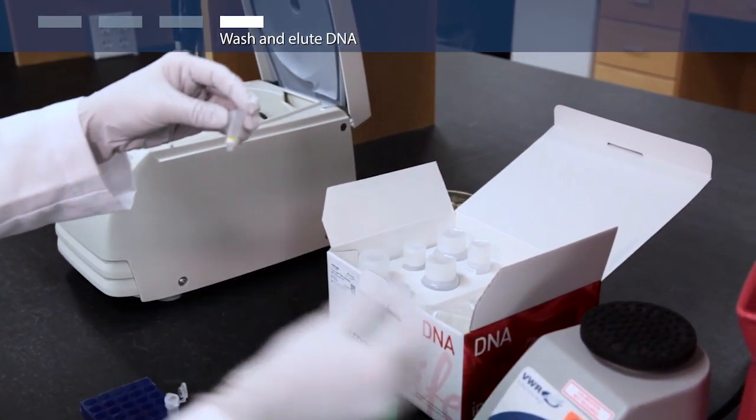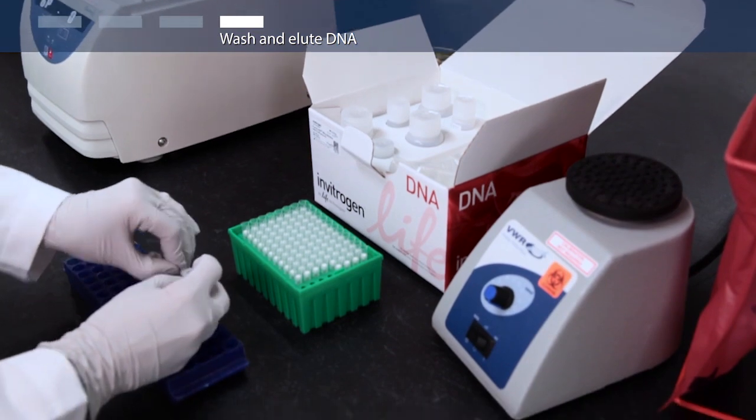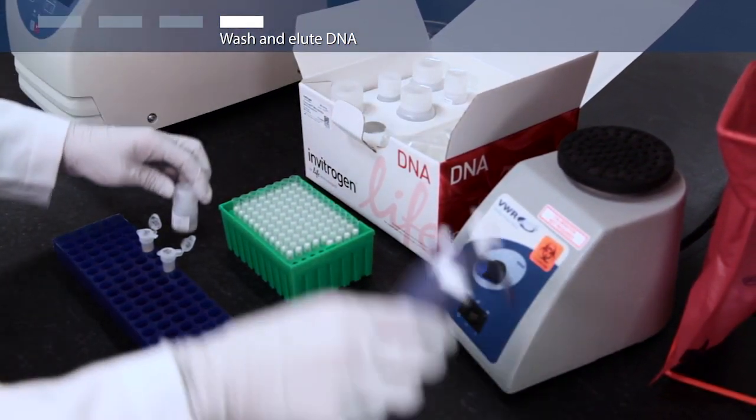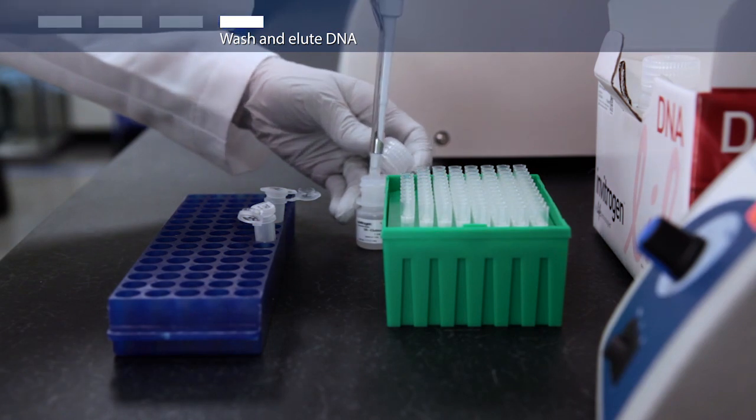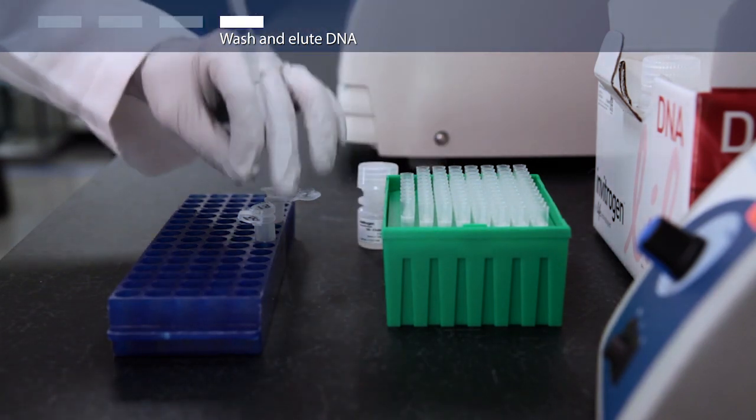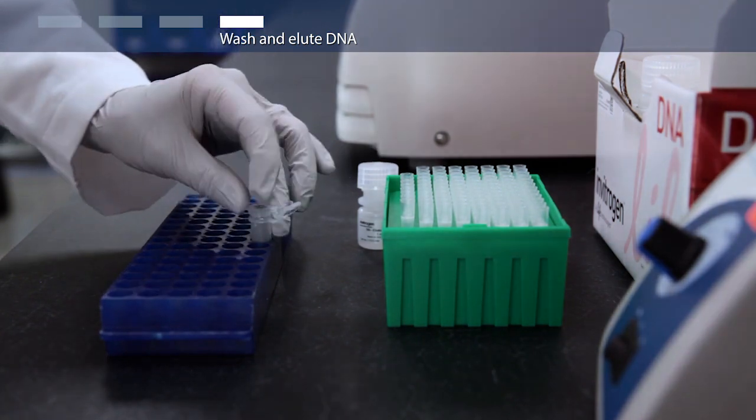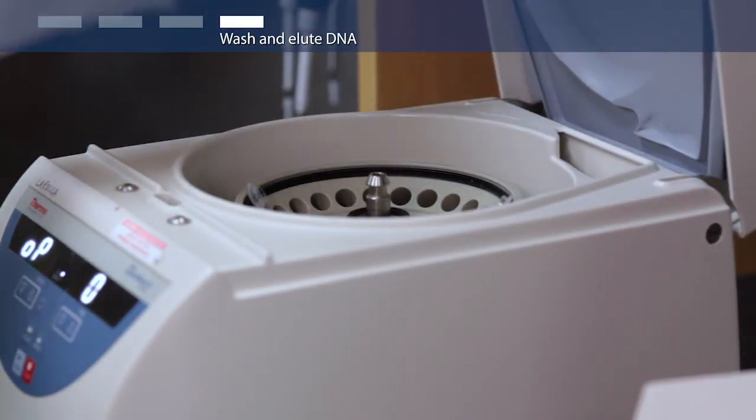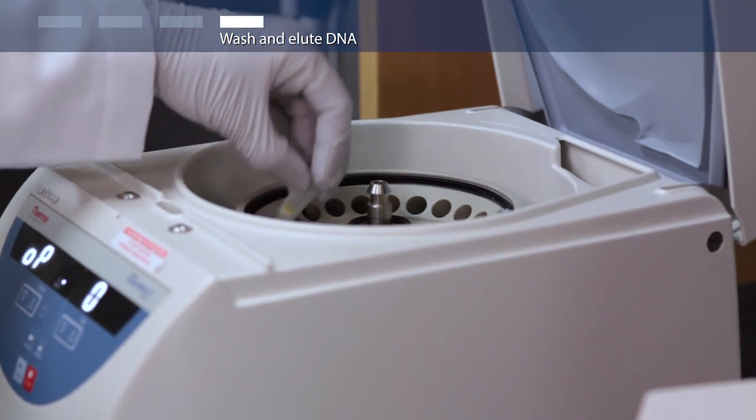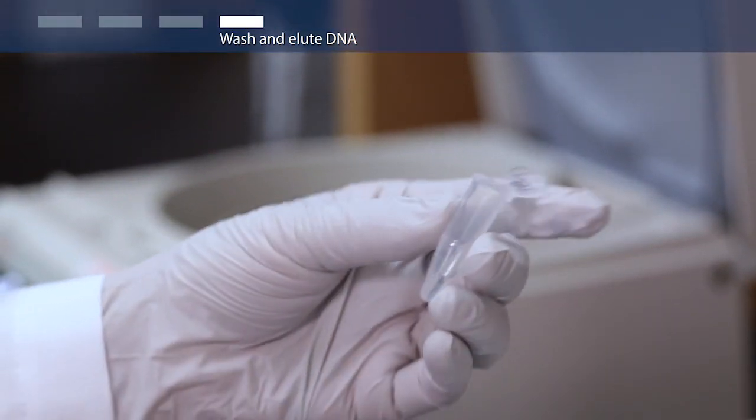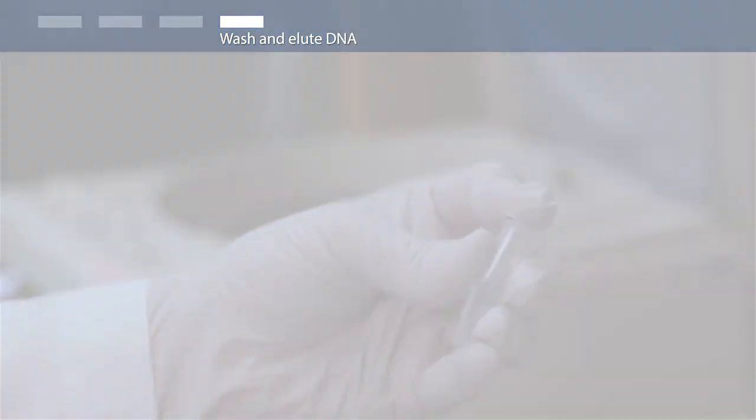Now, you'll elute the DNA by placing the spin column in a clean tube, adding 100 microliters of elution buffer and leaving at room temperature for 1 minute. Centrifuge for 1 minute at 14,000 G and discard the column. Your purified DNA is in the tube and ready for immediate use or storage.